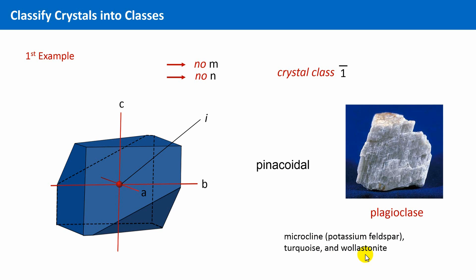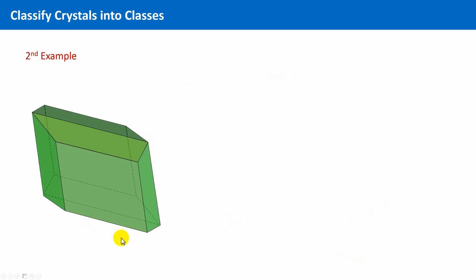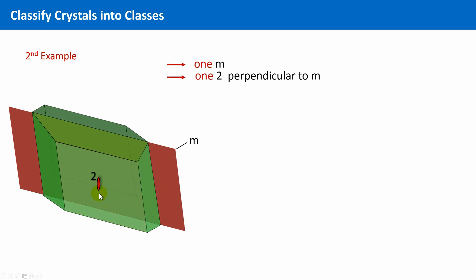Let's examine a second example. Here you see another schematic drawing of a crystal shape. Are you able to identify the symmetry elements of this shape? Well, there is one mirror plane, shown here in red, which cuts the shape into two identical halves.